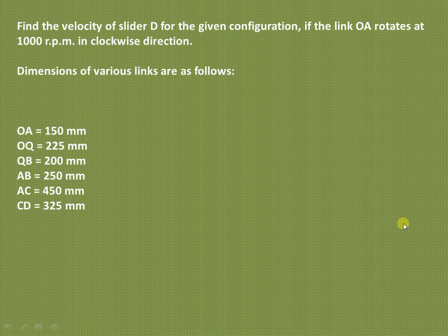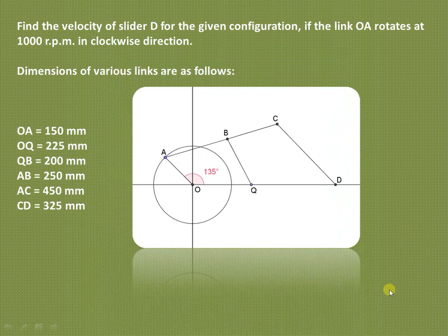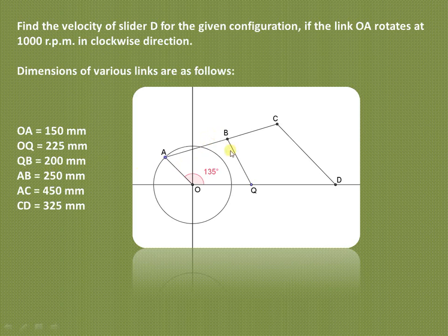Let us see another example on how to draw the velocity diagram for complex mechanisms. As shown, we have a mechanism in which OA is the crank, AB and AC are links, CD is an oscillating link, D is the slider, and Q is the fixed point. O and Q are the fixed points. The dimensions are: OA = 150 mm, OQ = 225 mm, QB = 200 mm, AB = 250 mm, AC = 450 mm, and CD = 325 mm.